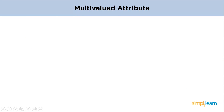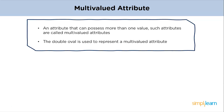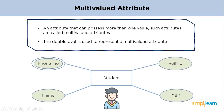An attribute that can possess more than one value is called a multivalued attribute, represented as a double oval shape. In the example, the student entity has attributes phone number, roll number, name, and age. Out of these, phone number can have more than one entry — and an attribute with more than one value is called a multivalued attribute.